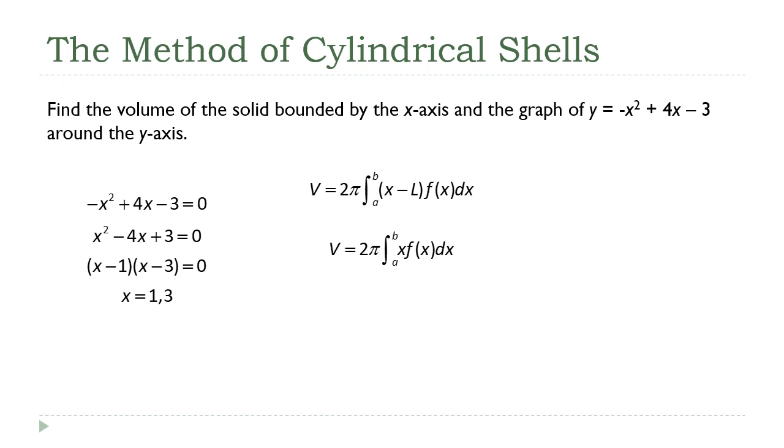So I'm going to integrate from 1 to 3, and f(x), that's just going to be that negative x squared plus 4x minus 3 polynomial. So if I put all three of those things in here, the integral becomes this, and that's a pretty basic integral. It's just a polynomial.